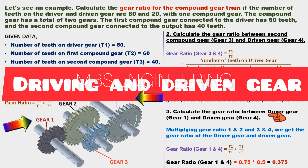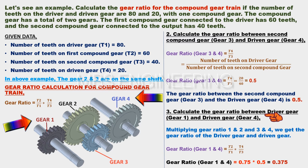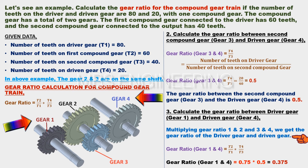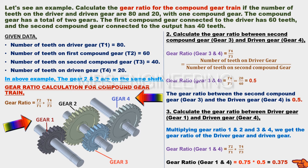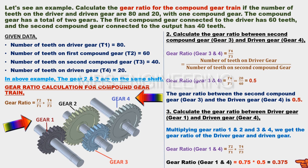Finally, we calculate the gear ratio between the driver gear (gear 1) and the driven gear (gear 4). Multiplying the gear ratios for gears 1–2 and gears 3–4, the overall gear ratio equals T2/T1 × T4/T3, which is 0.75 multiplied by 0.5. The gear ratio for the compound gear train (gears 1 to 4) equals 0.375.